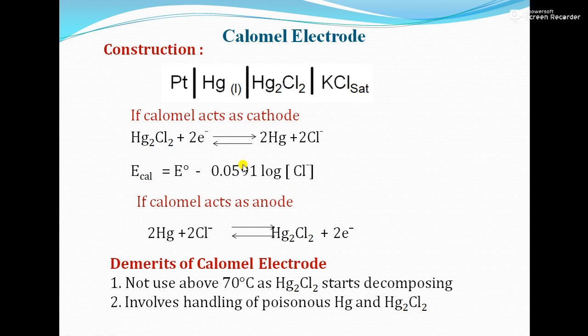There are some demerits of the calomel electrode. First, we cannot use it above 70°C, as Hg₂Cl₂ starts decomposing. Second, it involves handling of poisonous Hg and Hg₂Cl₂.